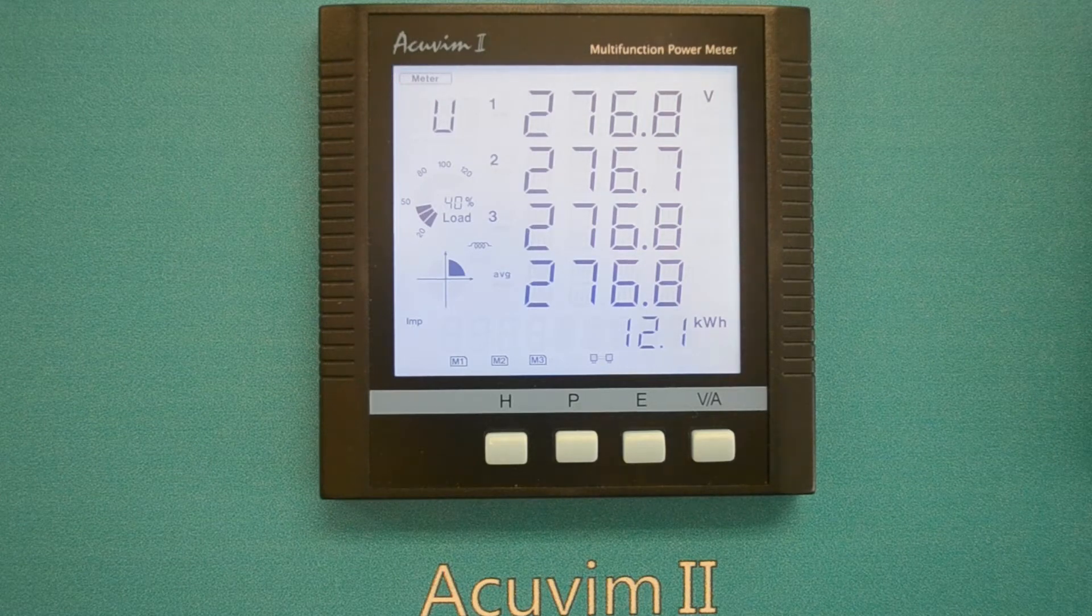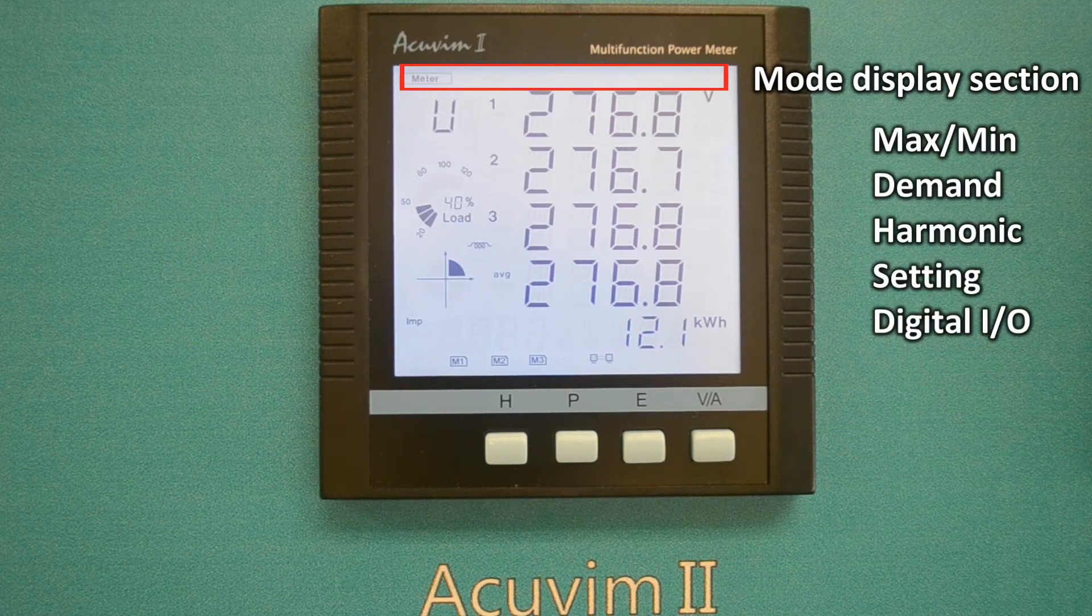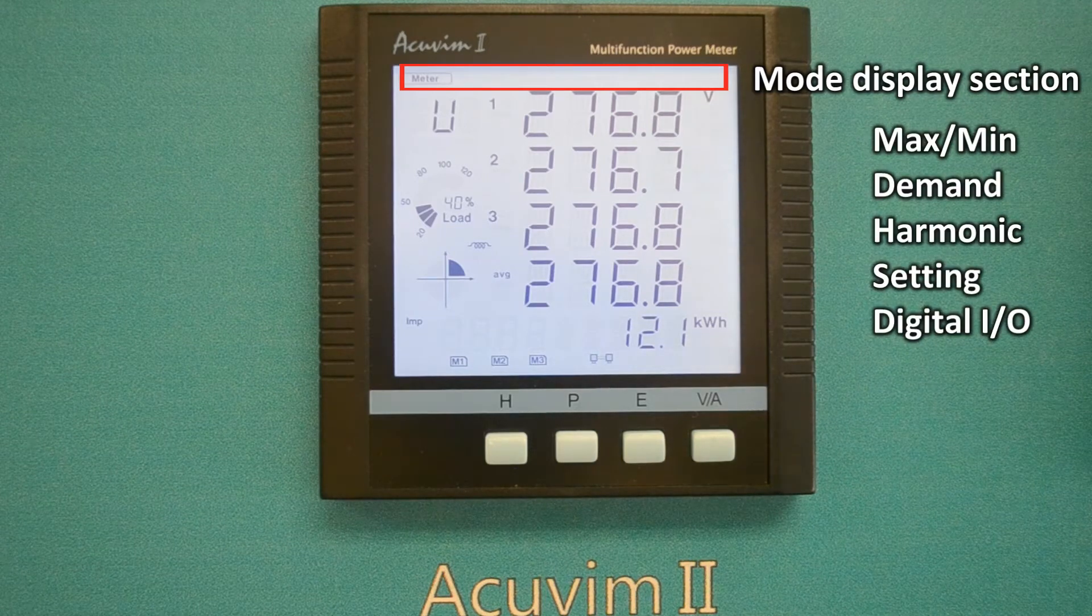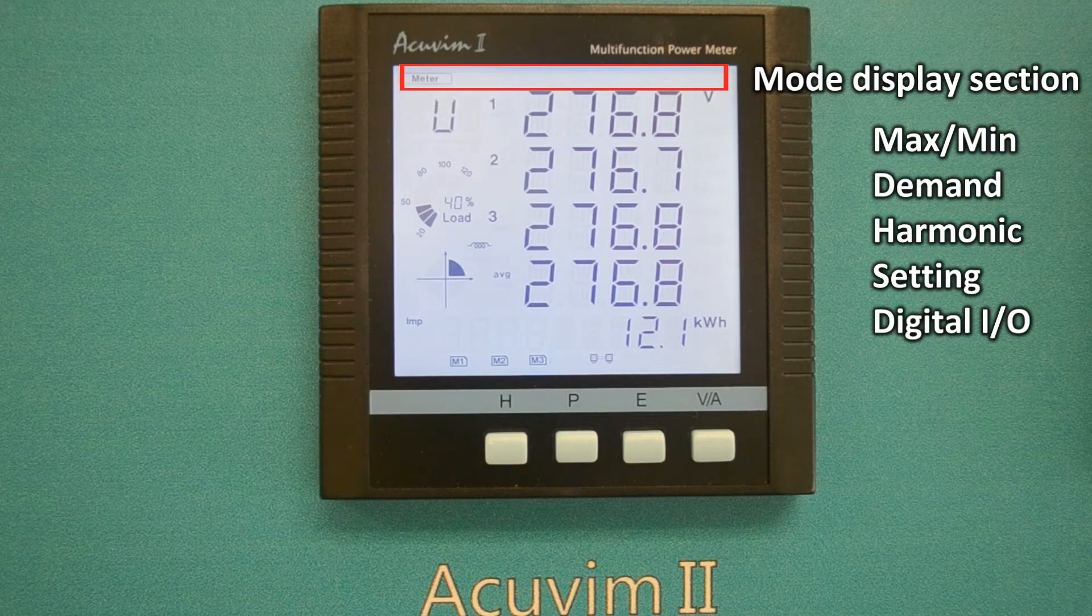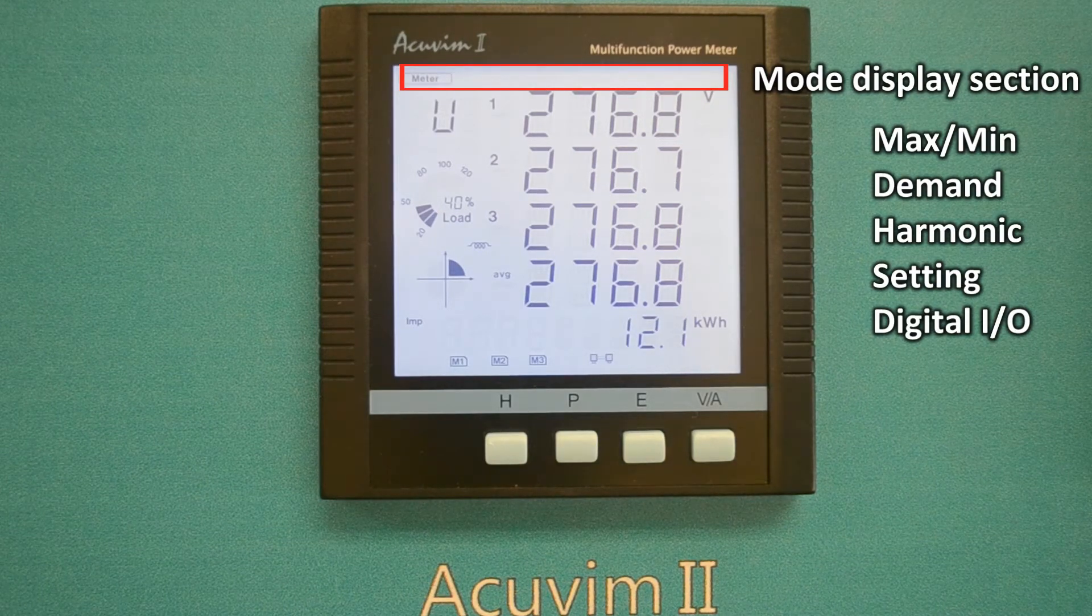On top of the meter icon, there are additional icons indicating other modes including MaxMin, Demand, Harmonic, Setting, and Digital I.O. We will cover these in a few moments as well.